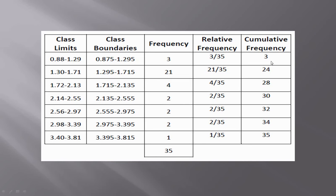Next is cumulative frequency. There is no specific method to find cumulative frequency values — you have to add successive frequency values in each class. To obtain the cumulative frequency value for the first class, it is simply the first class frequency value, which is 3. Then you add 21 to 3 to obtain the cumulative frequency value for the second class.